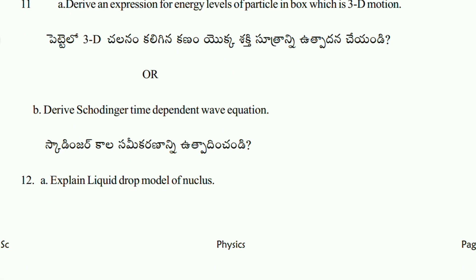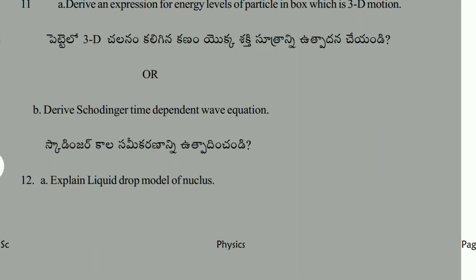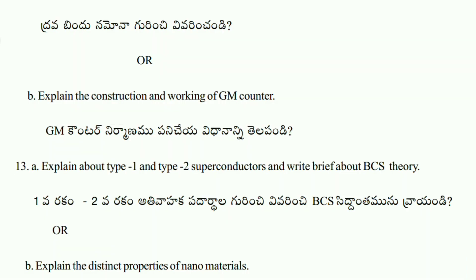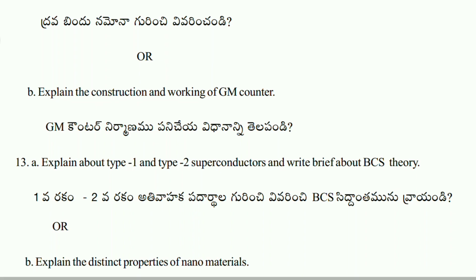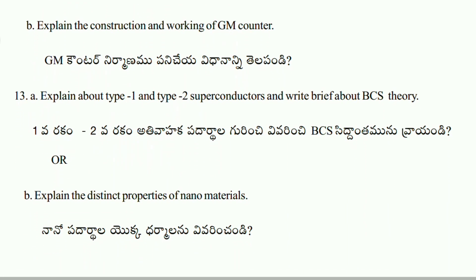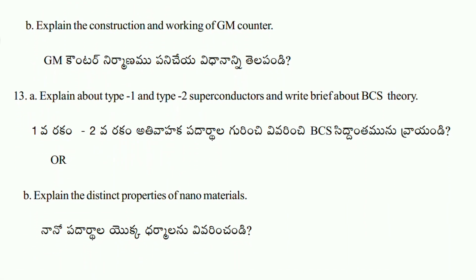Question twelve A: explain the liquid drop model of nuclei. Twelve B: explain the construction and working of a GM counter. Thirteen A: explain about type 1 and type 2 superconductors and write a brief about BCS theory. Thirteen B: explain the distinct properties of nanomaterials.